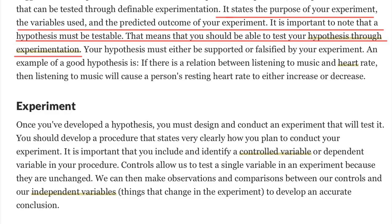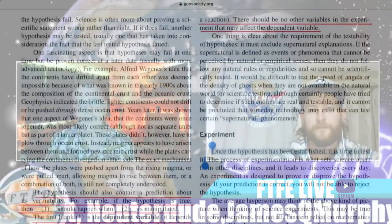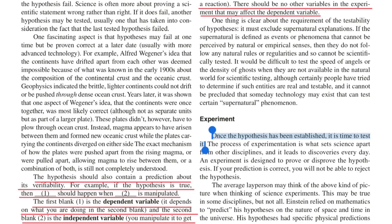Is this guy completely scientifically illiterate? A hypothesis is an educated guess. Does it contain the independent and dependent variable, or is that the experiment? Well, both have them — you have your IV and DV for a hypothesis, and your experiment has an IV, DV, and CV. The IV and DV in the hypothesis will not be the IV and DV in the experiment — they're different things. From GeoSociety.org: the hypothesis should contain a prediction about its verifiability — if the hypothesis is true, then one thing should happen when another is manipulated. There should be no other variables in the experiment that may affect the dependent variable.